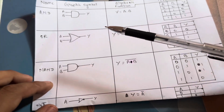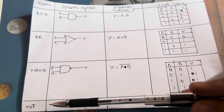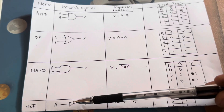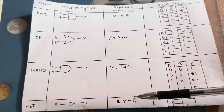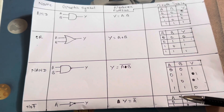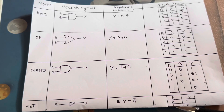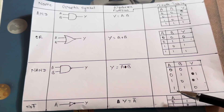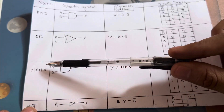Now let's talk about the NOT gate. The input is A. In the NOT gate, the output Y has the algebraic function Y equals A-not (A complement). So if A is 0, output Y is 1; and if A is 1, output Y is 0.